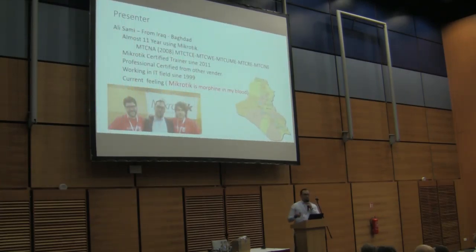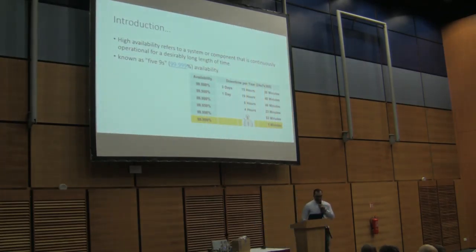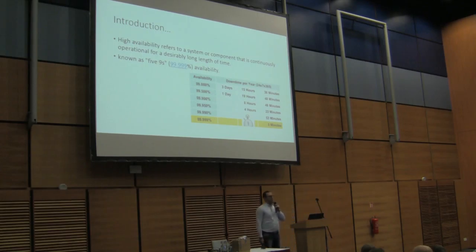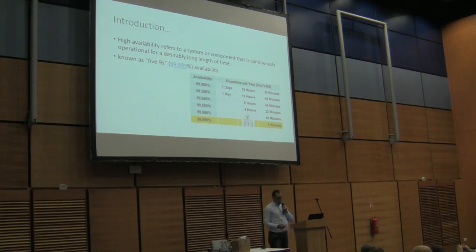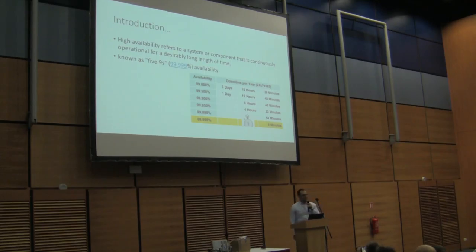MikroTik is kind of morphine in my blood — wherever I go, I'm thinking MikroTik. Anyway, to start about high availability: it's a very easy explanation of how to keep and make our components or network operational for a desirable amount of time. The best value we can aim for is something like six nines, about five nines availability. The average best case, for example, is around the year about only five minutes downtime.